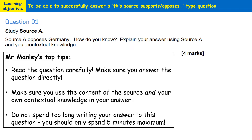This question is only worth four marks — it's a smaller GCSE style question — and because it's only worth four marks you're only expected to spend about five minutes answering it. The question will be formatted as follows: 'Source A opposes or supports something in particular — how do you know? Explain your answer using the source and also your own contextual knowledge.' That last part is the most important: you must use both the source itself and your contextual knowledge.